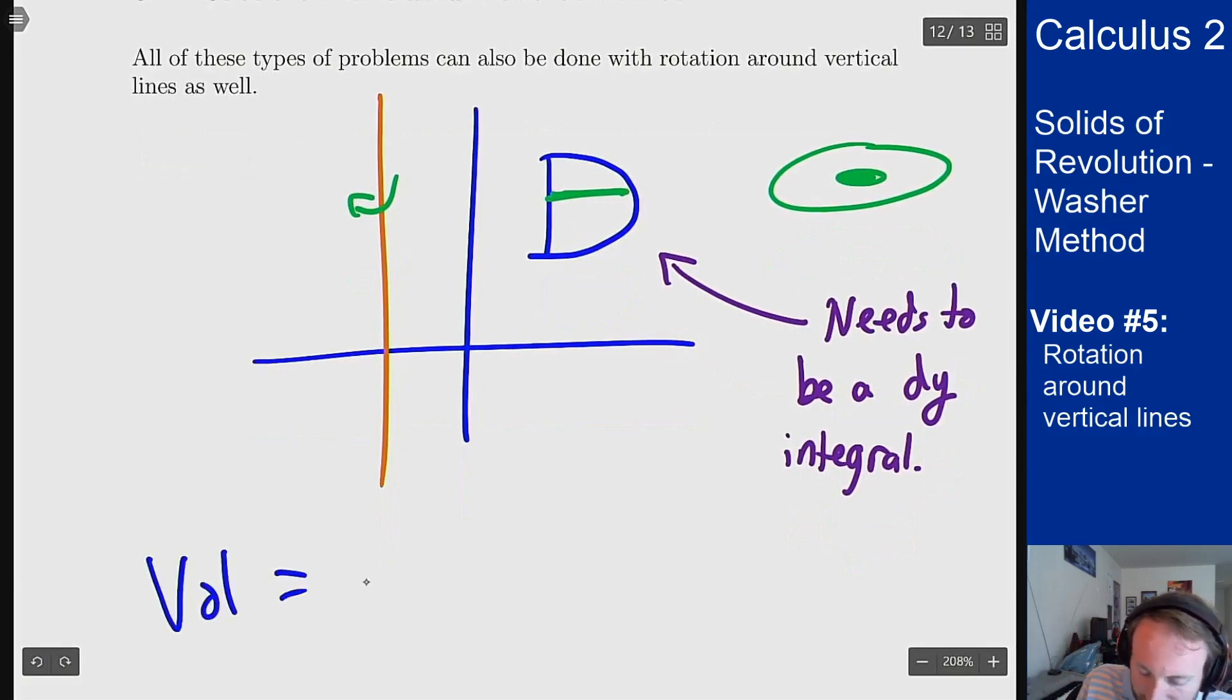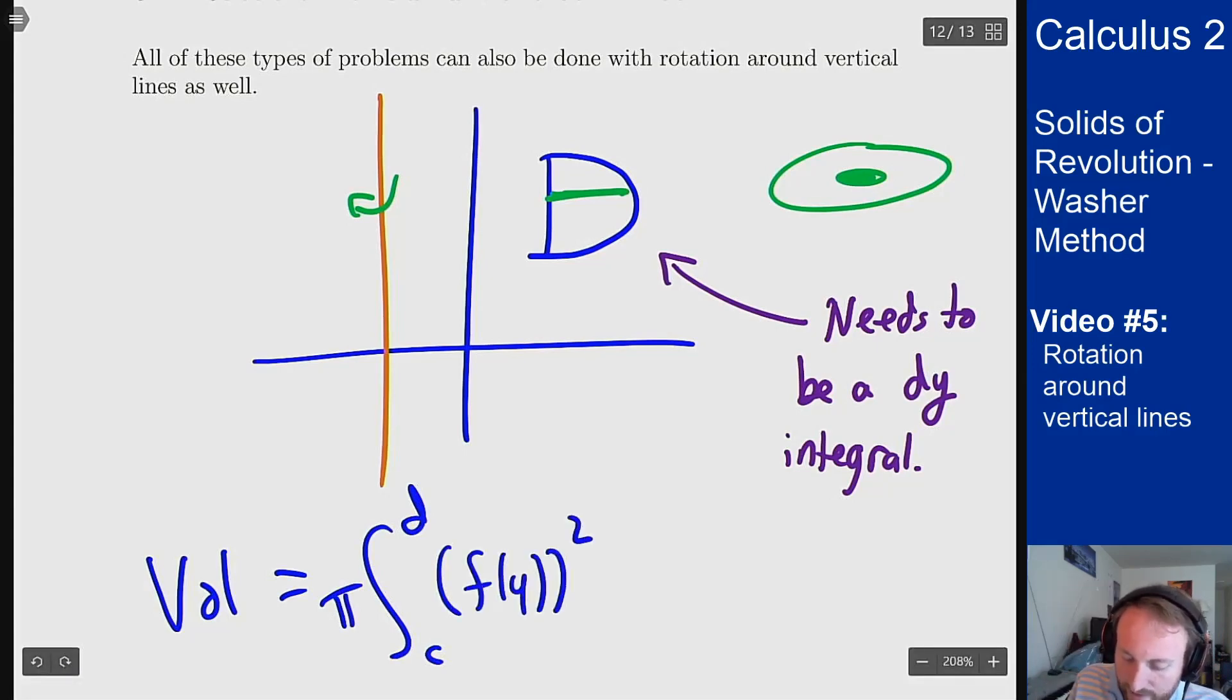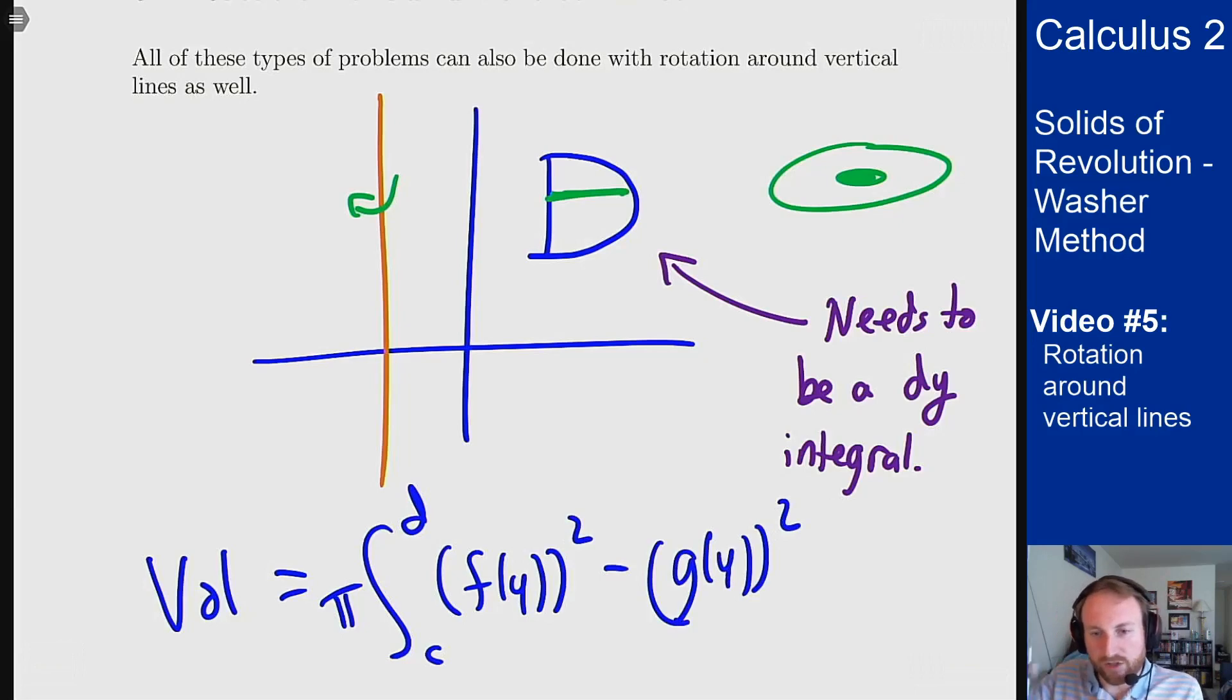So here we'll get a volume that is an integral from c to d with a pi in front of it and now instead of having an f of x and g of x it's now going to be an f of y squared minus a g of y squared where this f of y is the further function from the axis of rotation horizontally and the g of y is a closer function horizontally dy.